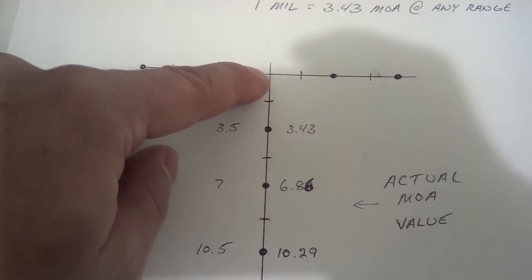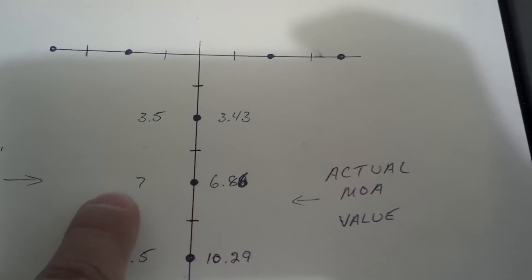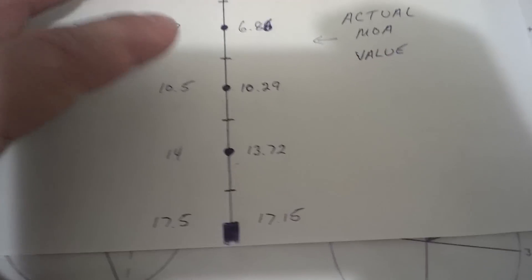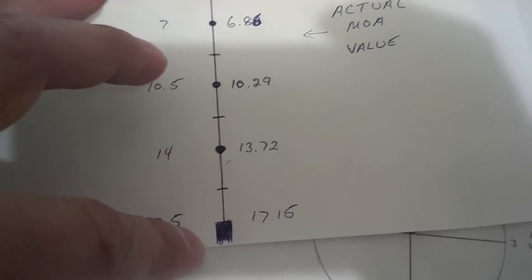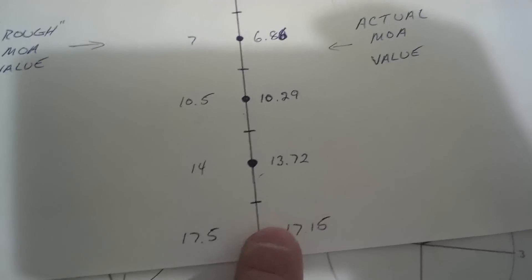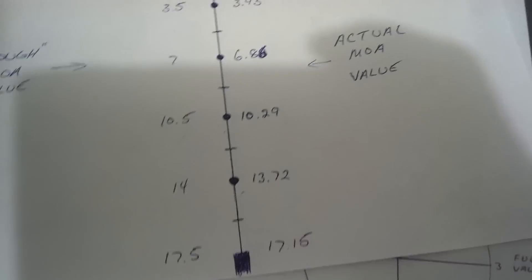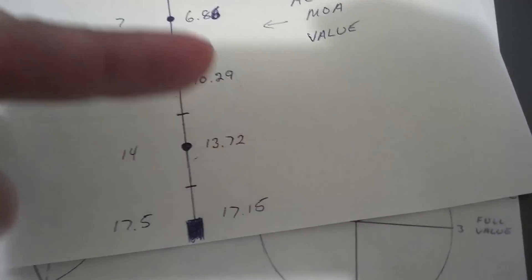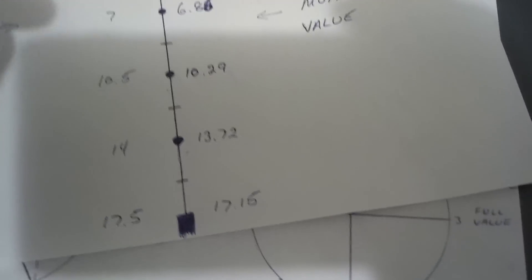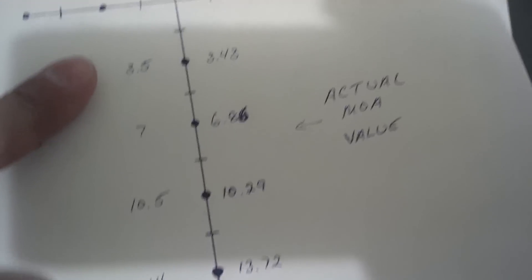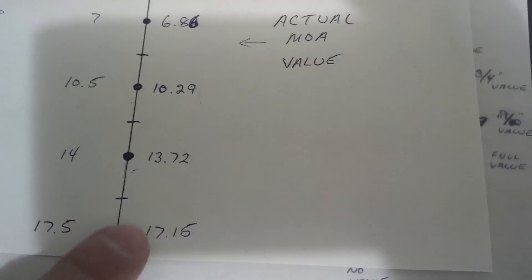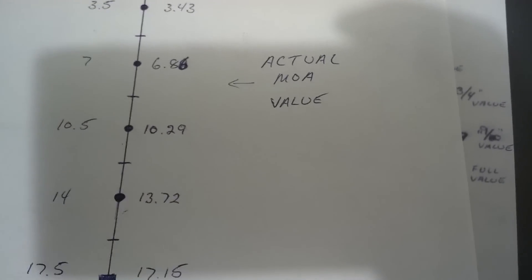What do we do? We fudge the numbers just a little bit — we call a mil 3.5 minutes instead of 3.43. Is it correct? No. But it's close enough and it's easy to use on the fly. So if you were aiming and missed the target 2 mils low, we dial 7 minutes on the gun. With this error, as you get farther and farther away and keep dialing, you can see that when fudging the numbers, there's a 0.35 variance at 5 mils — and it keeps getting more. That 3.5 is actually over one full click value, so you can mechanically see the error. If you wanted to be precise you'd dial 17.25, but our fudged number gives 17.5.